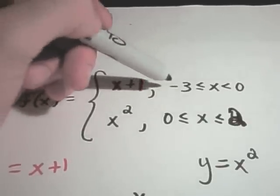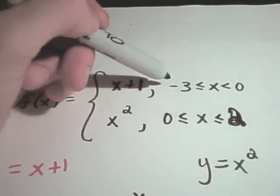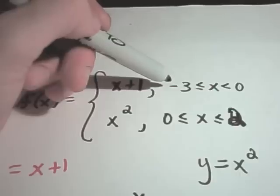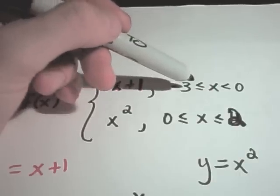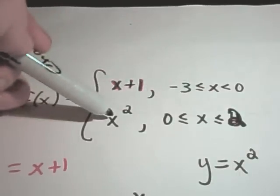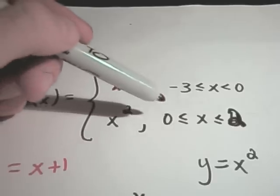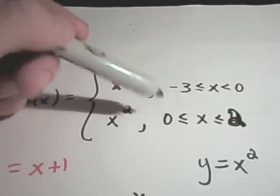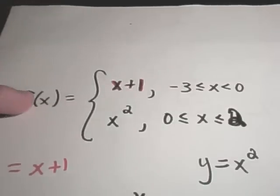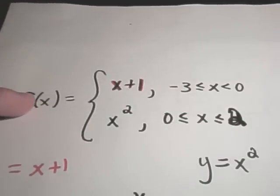Our piecewise defined function that we want to graph has two parts: x plus 1, graphed on the interval from negative 3 to 0, and then x squared on the interval from 0 to 2.